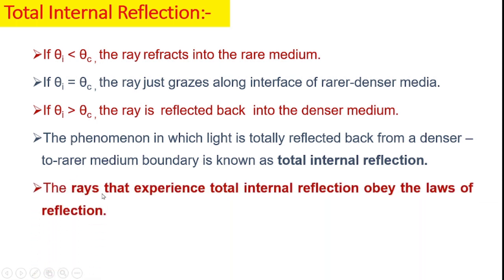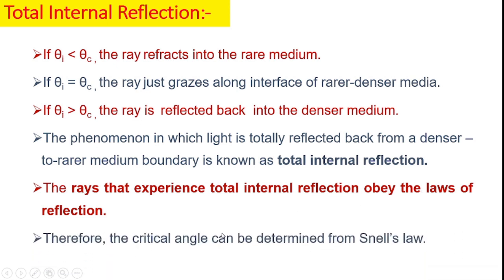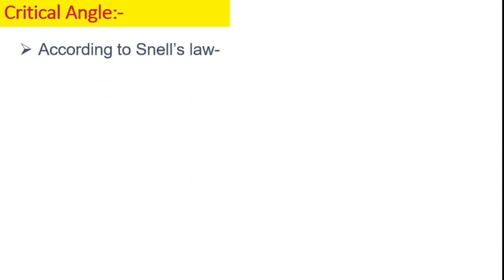The rays that experience total internal reflection obey the laws of reflection, and therefore the critical angle can be determined from Snell's law. According to Snell's law, we can write: n1 sin(theta1) = n2 sin(theta2). When theta1 is equal to theta c, then theta2 is 90 degrees, as already described.